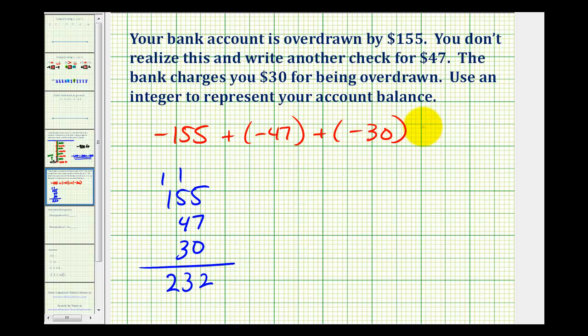And because we owe that amount, we could represent this as a negative integer. So this sum will be negative 232. And because we're talking about dollars, we can go ahead and put units on this. This would be negative 232 dollars.